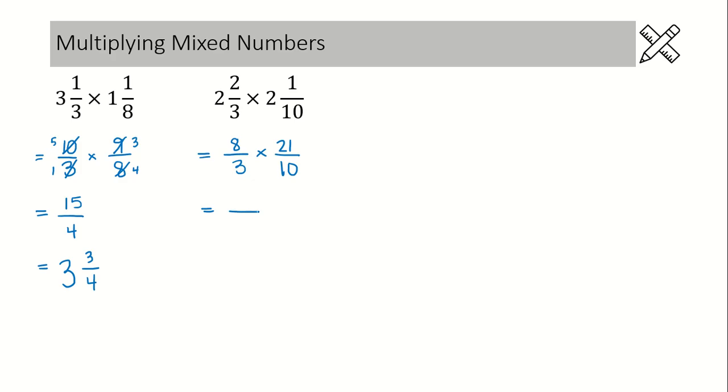Okay, before we multiply, cancel common factors. 8 and 10 have a common factor of 2. 8 divided by 2 is 4, and 10 divided by 2 is 5.